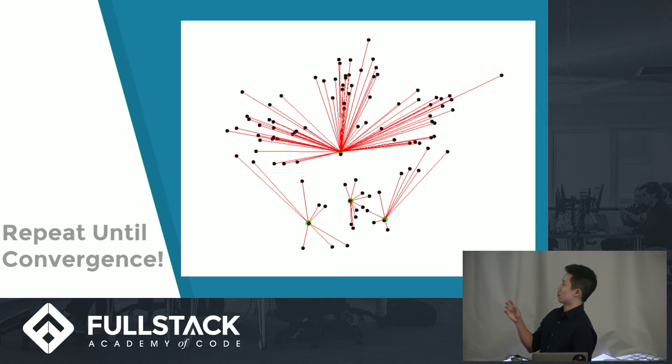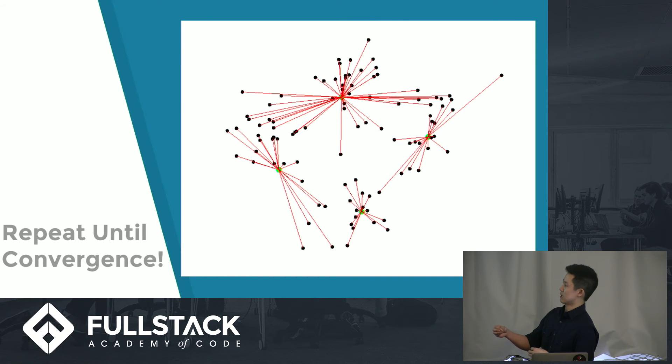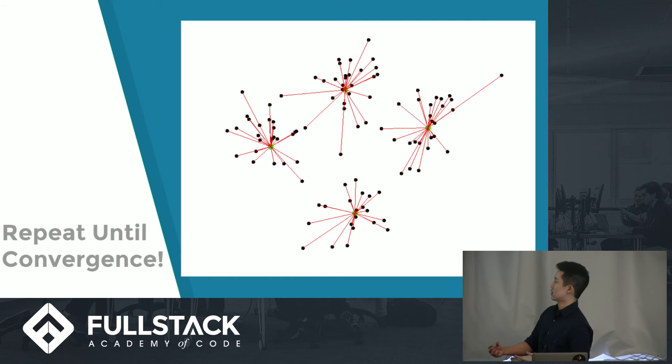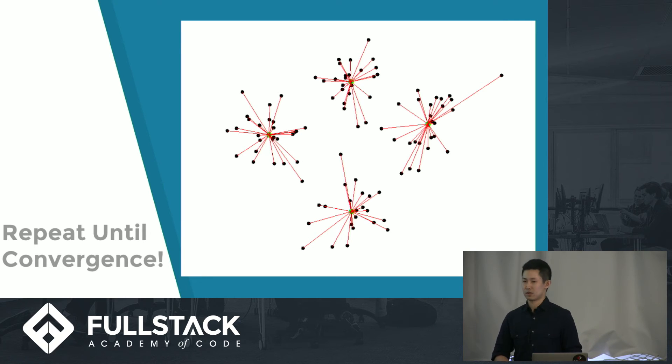The data points are assigned based on proximity to that centroid. As the data points are assigned, the centroids continue to move based on the data points assigned to them, and so on. Finally, when it converges, you'll see that the centroid no longer moves and the data points no longer shift between the clusters.